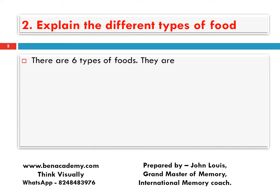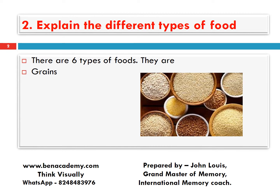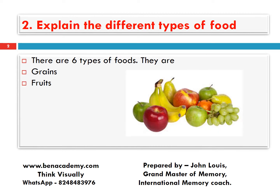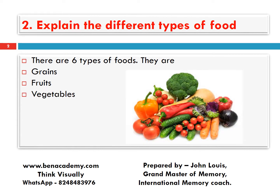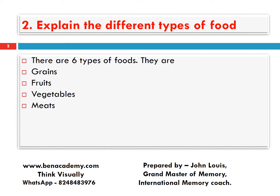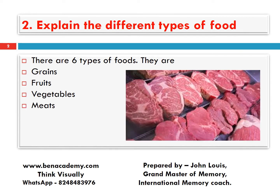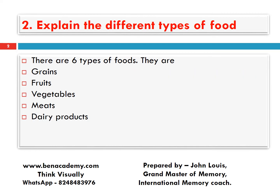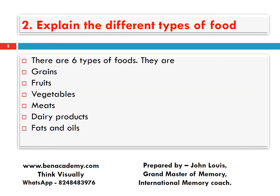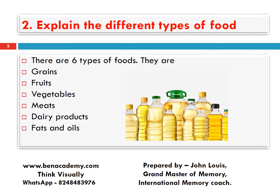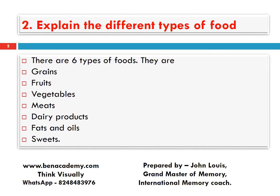There are 6 types of foods. They are: grains, fruits, vegetables, meats, dairy products, and fats and oils. Additionally we can include one more, that is sweets.